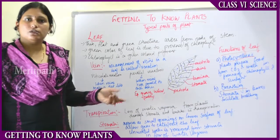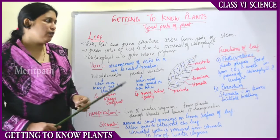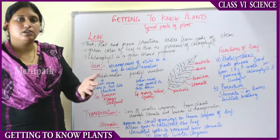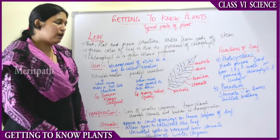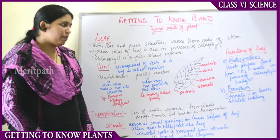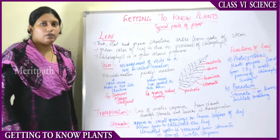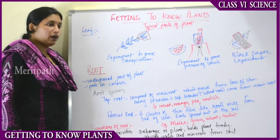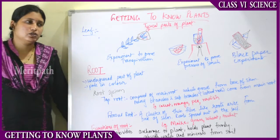Unwanted water is removed from the leaf in the form of water vapor through stomata. Excessive water present in the leaf is lost in the form of water vapor through the stomata, and this process is called transpiration. So that is about the leaf — transpiration and photosynthesis are its functions.